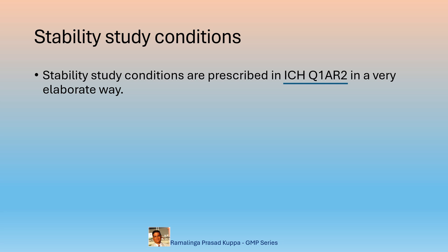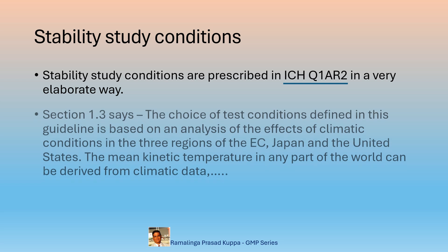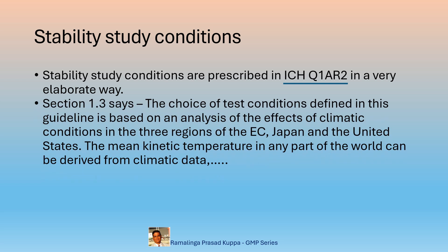The mean kinetic temperature concept should be understood well. Section 1.3 of ICH Q1AR2 prescribes that the choice of test conditions defined in this guideline is based on an analysis of the effects of climatic conditions in three regions: the CEC, Japan, and the United States. The mean kinetic temperature in any part of the world can be derived from climatic data, and the stability study temperatures are derived based on it.